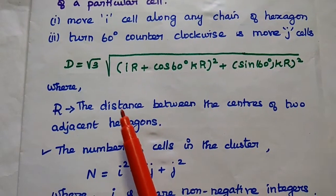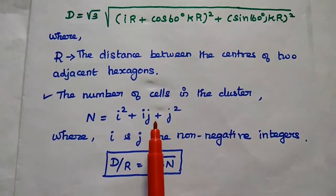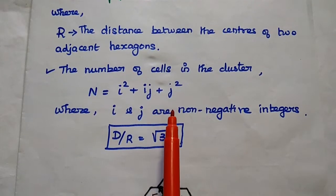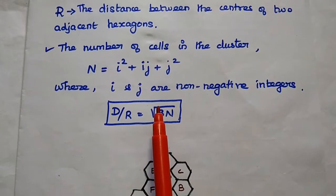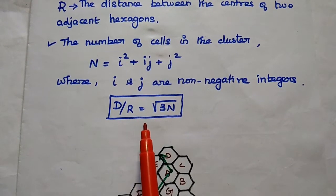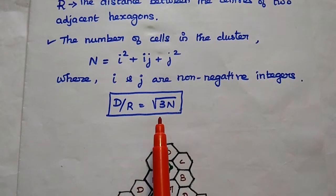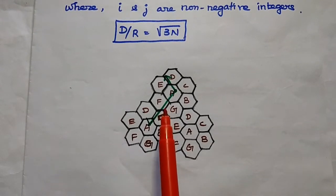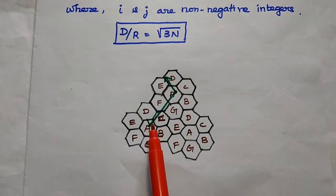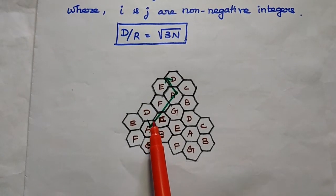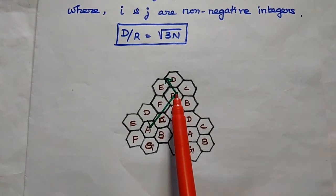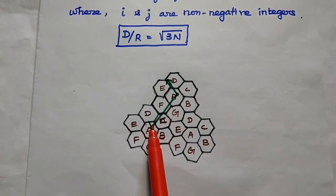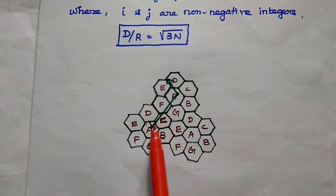From this process, we can find the distance as √3 × √(i·r + cos60°·k·r)² + (sin60°·k·r)², where r is the distance between the centers of two adjacent hexagons. From this, we can find the number of cells in the cluster as N = i² + i·j + j², where i and j are non-negative integers. Finally, the distance between two co-channel cells is given as √(3N) × r, where N represents the cluster size. This is the diagrammatic explanation for cell planning with hexagonal cells — we move i cells along the hexagon chain, then turn 60 degrees counterclockwise and move j cells, where r is the distance between the centers of adjacent hexagons.